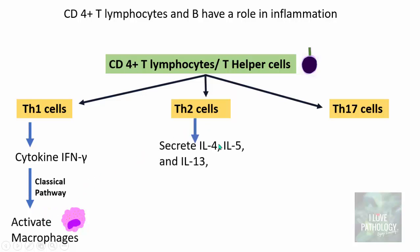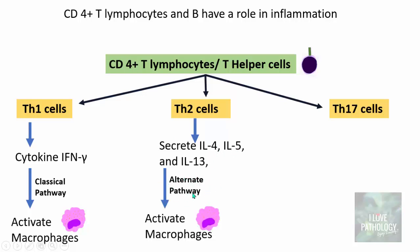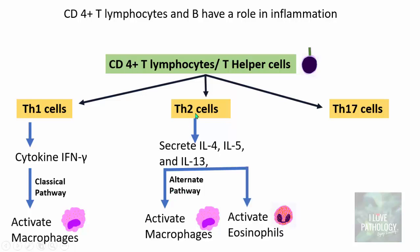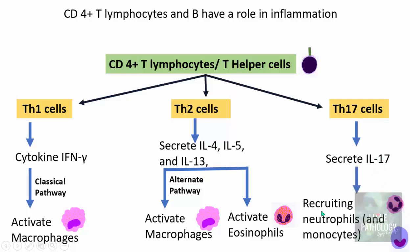TH2 cells secrete interleukin-4, interleukin-5, and interleukin-13, which activate macrophages via the alternate pathway — these macrophages are anti-inflammatory in nature. TH2 cells also activate eosinophils. TH17 cells secrete interleukin-17, which helps in recruiting neutrophils and monocytes. So even though chronic inflammation mostly involves mononuclear cells, remember that TH17 cells with interleukin-17 help recruit neutrophils, meaning neutrophils can also be seen in chronic inflammation.